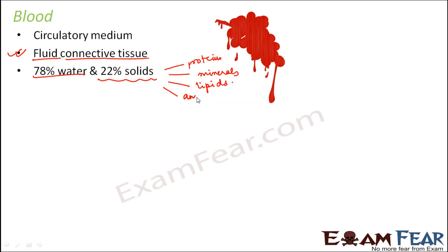The 22% solids also contain amino acids and glucose — so many different varieties of solids. Blood is essentially water combined with proteins, minerals, lipids, amino acids, and glucose. You might wonder why blood is red: the color is due to a pigment called hemoglobin. Hemoglobin is red in color and imparts that color to the blood.